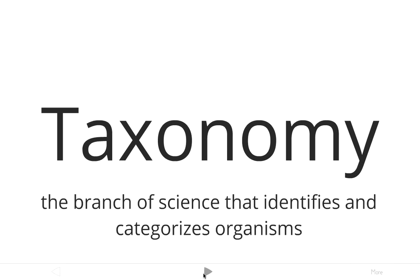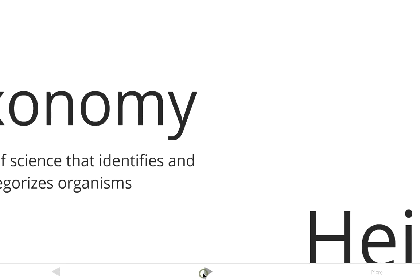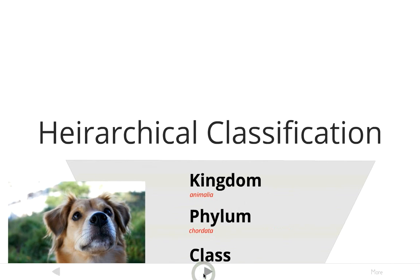Taxonomy is the branch of science that identifies and categorizes organisms — it basically puts organisms into groups. In taxonomy, scientists use a system called hierarchical classification.